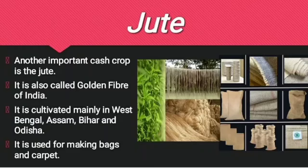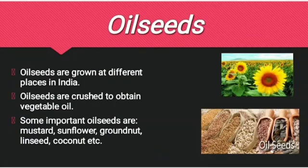Jute is another important cash crop of India, also known as golden fiber. It is cultivated in the states of West Bengal, Assam, Bihar, and Odisha. It is used for making bags and carpets. Oil seeds are cash crops grown in different places in India. They are crushed to obtain vegetable oil. Some important oil seeds are mustard, sunflower, groundnut, etc.